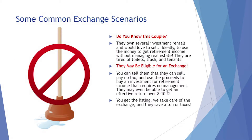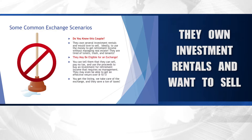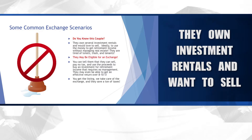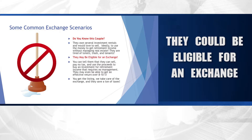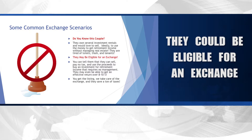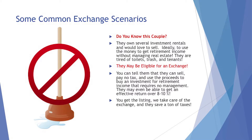Here's another scenario. You know this couple — they own several investment rentals and they'd love to sell. Ideally they'd use the money to get retirement income without any management headaches, because they're tired of the terrible T's: the toilets, the trash, and the tenants. They're eligible for an exchange — they're selling investment property that requires too much maintenance. You can tell them they can sell, pay no tax, and use the proceeds to buy an investment for retirement income with no management required. They may be able to get an effective yield of 8% to 10% and won't be managing the properties, improving their income and reducing their responsibilities. You'll get the listing, we'll take care of the exchange, and they'll save a ton in taxes.